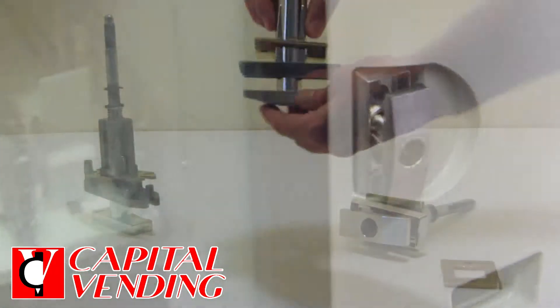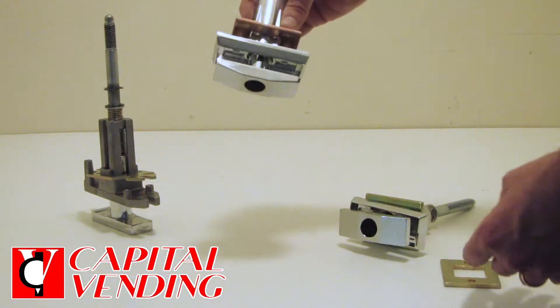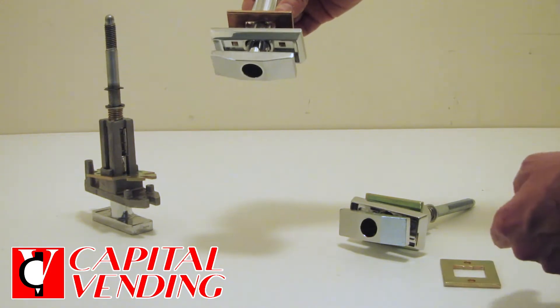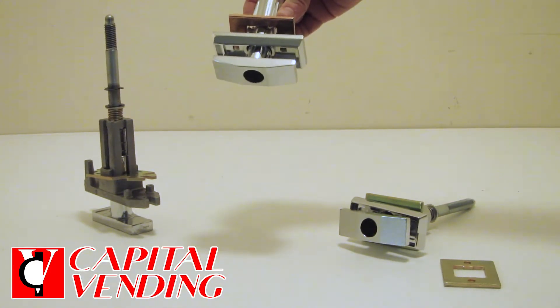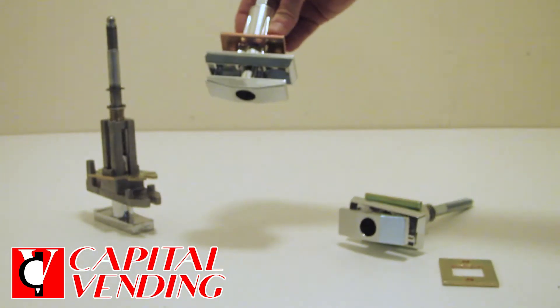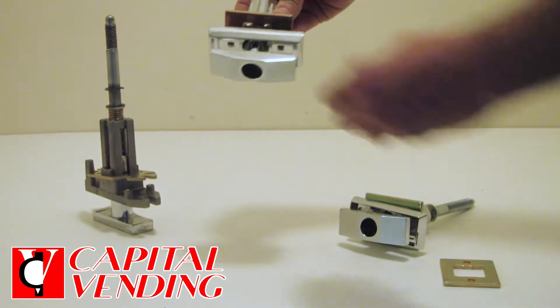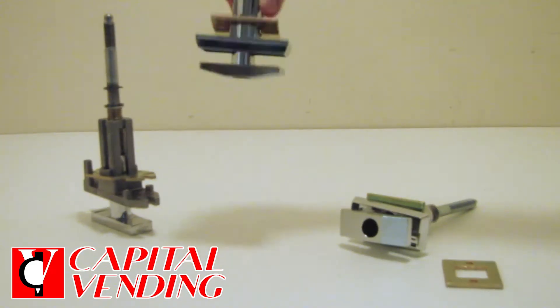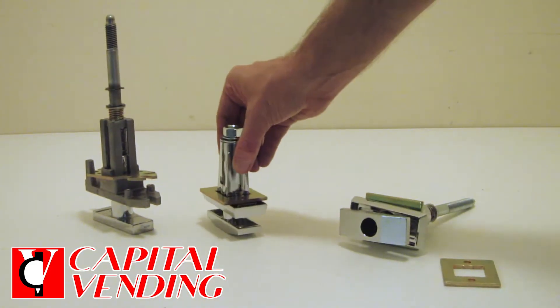In any case, this is a very typical 90-degree turn handle. This is often used in older Rowe vending machines, the newer Dixie Narco BevMax 4. A lot of automatic products machines have this typical 90-degree turn, and this is generally just going to fit all those models.